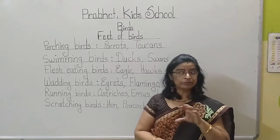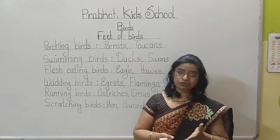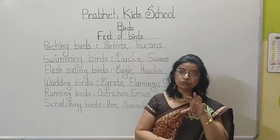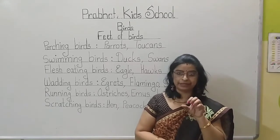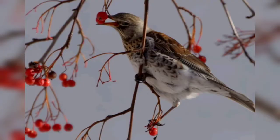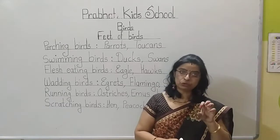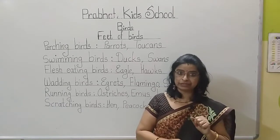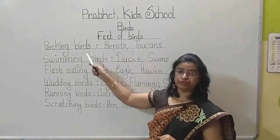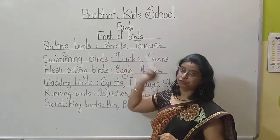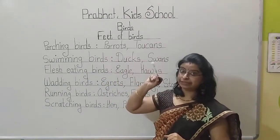Their feet fold around and grip the tree branches. While they are eating, their feet help them to grip the branches. That's why these birds are known as perching birds, and examples of perching birds are parrots and toucans.